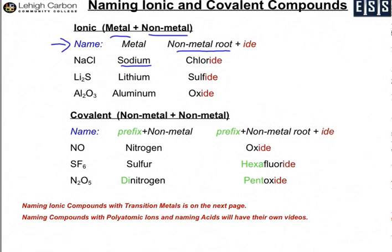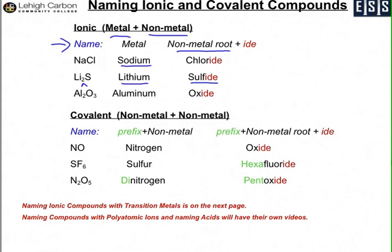Moving to the next example: lithium sulfide. You notice the metal — you still just say the full metal name, lithium. You do not have to address the subscript. For sulfur, the non-metal root is S-U-L-F and then you add the IDE, so sulfide. The last example is aluminum oxide — again you just state the metal, you don't worry about the subscript. For oxygen the root is O-X and you add your IDE for aluminum oxide.